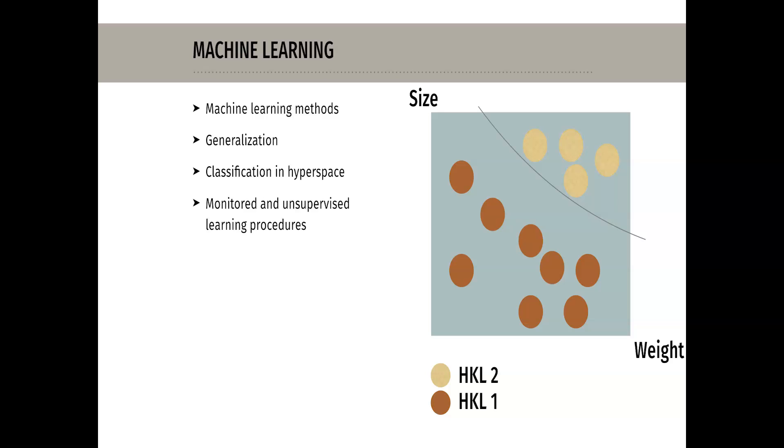A simple example of machine learning is classification using characteristics. Imagine you have the task of classifying a potato harvest into quality categories. The characteristics that decide which category a particular potato belongs to were determined by the expert, in our case the farmer. So the target assignment of the variables is known. It would make more sense to train a machine that independently derives a classification function based on the given characteristics.